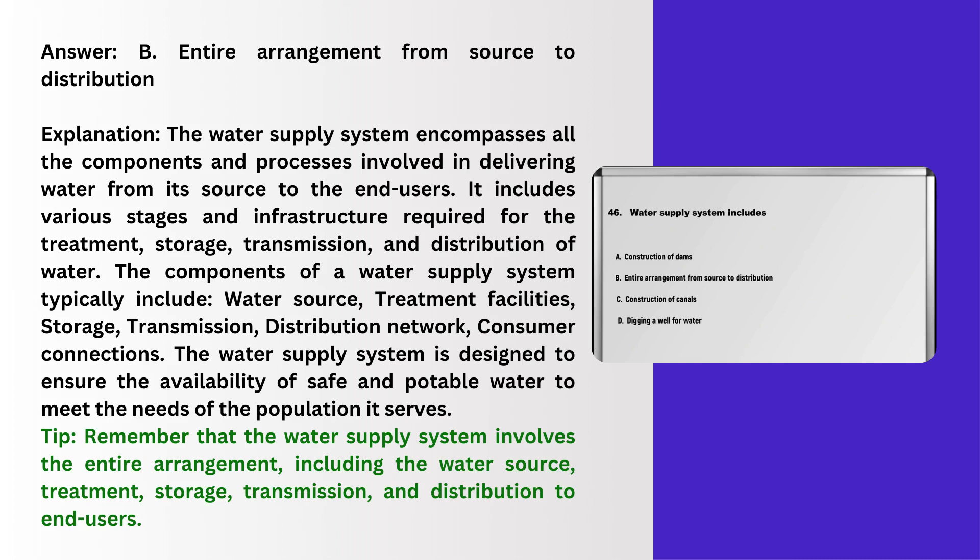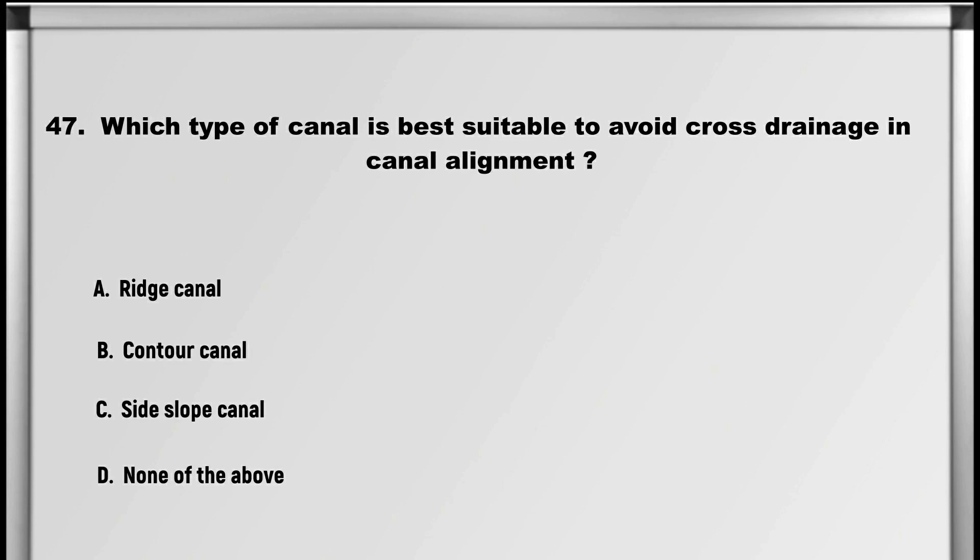Explanation: The water supply system encompasses all the components and processes involved in delivering water from its source to the end users. It includes various stages and infrastructure required for the treatment, storage, transmission, and distribution of water. The components of a water supply system typically include water source, treatment facilities, storage, transmission, distribution network, and consumer connections. The water supply system is designed to ensure the availability of safe and portable water to meet the needs of the population it serves. Tip: the water supply system involves the entire arrangement including the water source, treatment, storage, transmission, and distribution to end users.